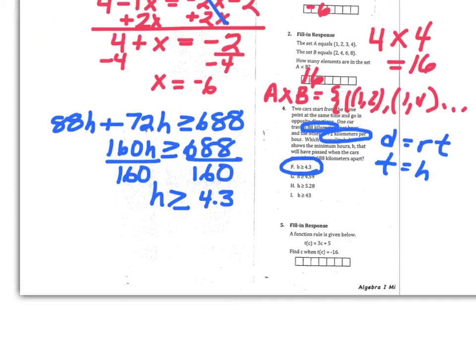Alright, for number 5, we are given a function rule. T of C is equal to 3C plus 5. And they're asking us to find C when T of C is equal to negative 16. So in this problem, you are going to need to make sure that you are substituting in the appropriate place.